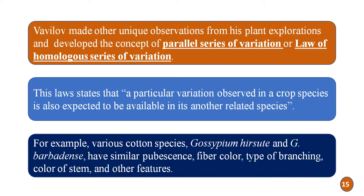Vavilov also made another unique observation from his plant explorations and developed a famous concept: the law of homologous series of variation, also called the law of parallel series of variation. This law states that a particular variation observed in a crop species is also expected to be available in the same feature in its related species. For example, various cotton species like Gossypium hirsutum and Gossypium barbadense have similar variations in fiber color, type of branching, color of the stem, and other features.